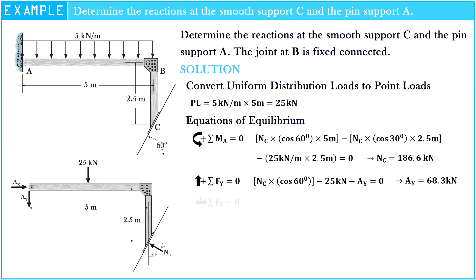The sigma of force along X axis equals zero. Ax minus Nc times sine 60 degrees equals zero. Hence, Ax equals 161.6 kN.